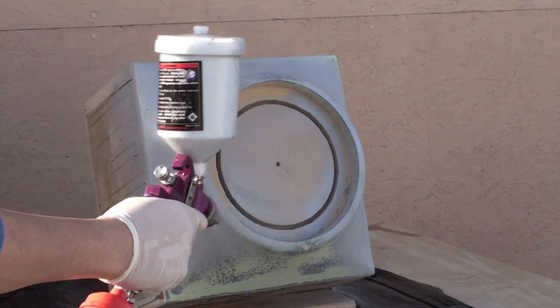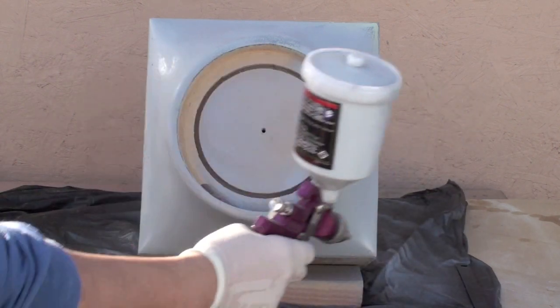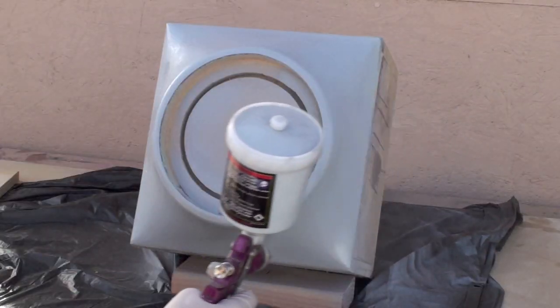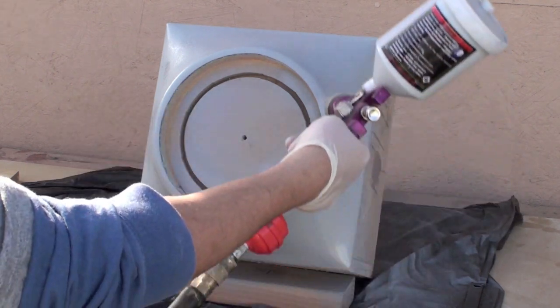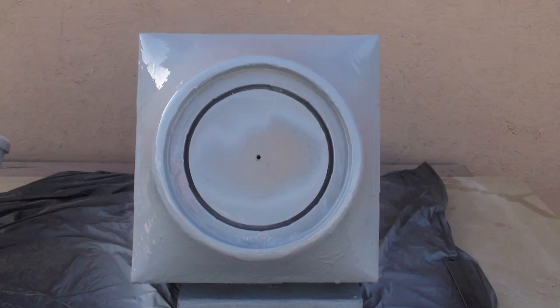It's completely normal if the primer begins to run. Any runs can be sanded down once the primer has dried. For best results, I always recommend the Highbuild 2K Primer. Let the primer dry for a few hours.